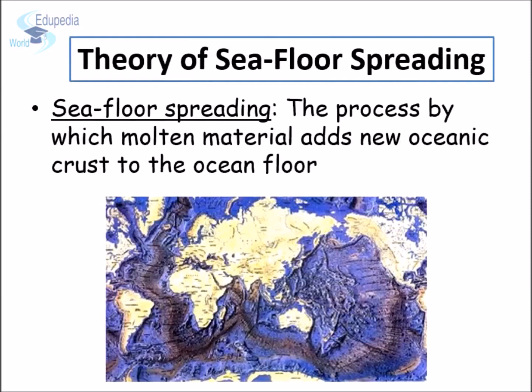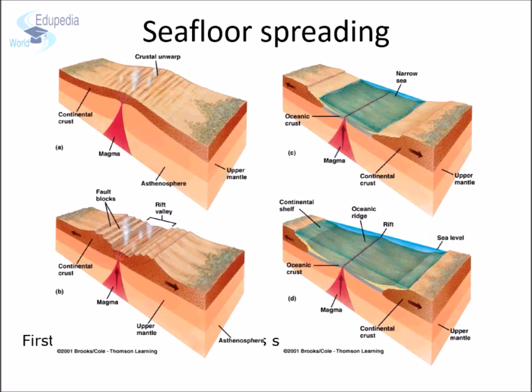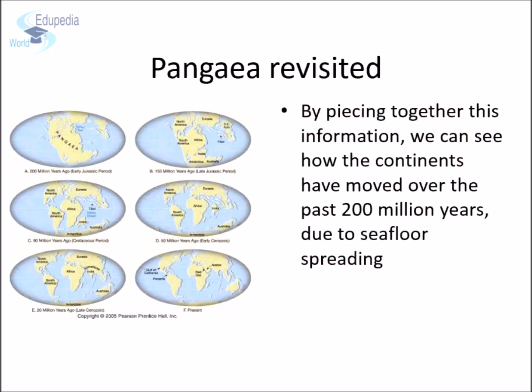So, seafloor spreading can be stated as: it is a process by which molten material adds new oceanic crust to the ocean floor. As molten material erupts, it pushes the existing crust away and forms new crust. This is how the theory of Pangaea was revisited. By piecing together this information, we can easily see how the continents must have moved over the past 200 million years due to seafloor spreading.